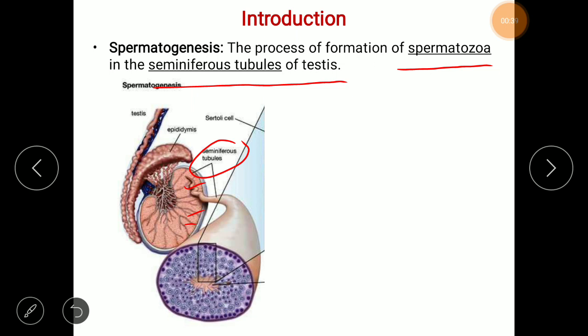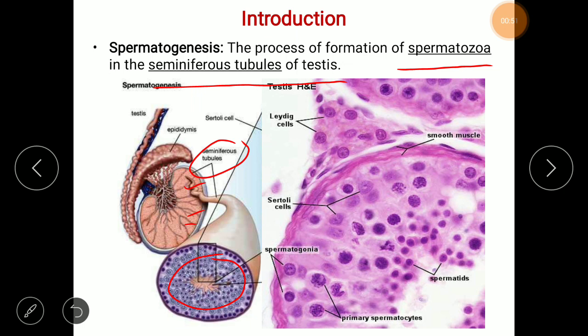If we look at the cross section of seminiferous tubules, we can see many cells in different stages of sperm formation. Here we focus on three cells: the first is the spermatogonia, second is the Sertoli cells, and third is the Leydig cells. Spermatogonia and Sertoli cells are in the wall of the seminiferous tubules, whereas Leydig cells are present between the seminiferous tubules. That is why Leydig cells are also called interstitial cells.